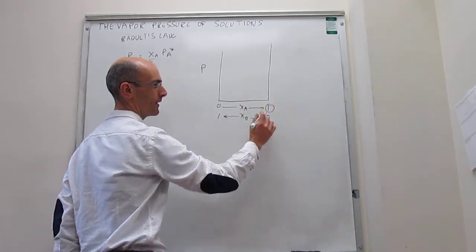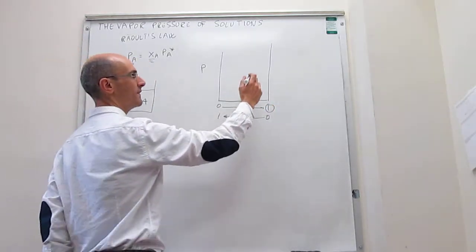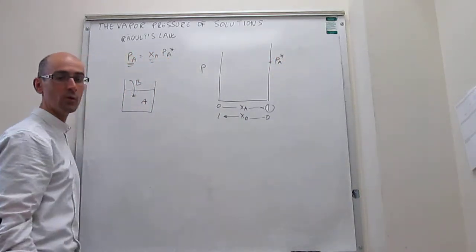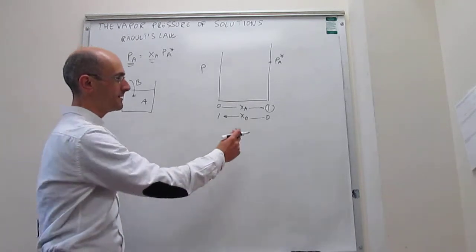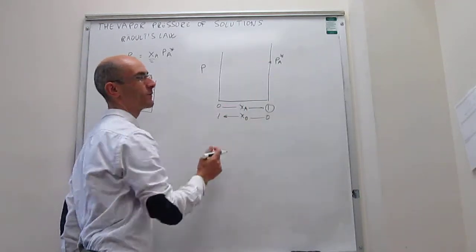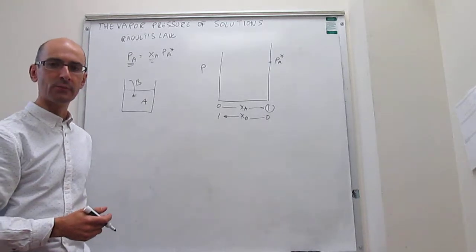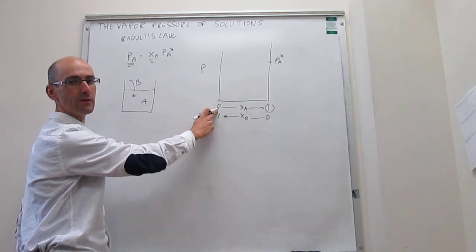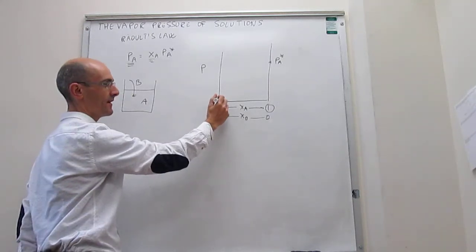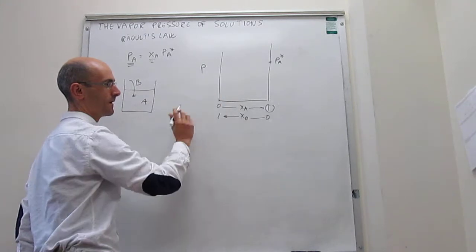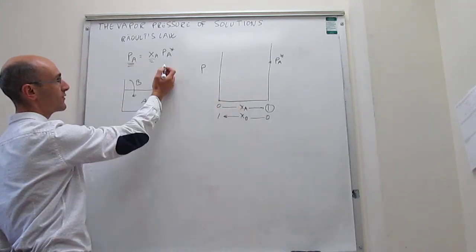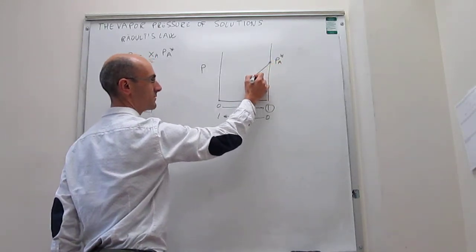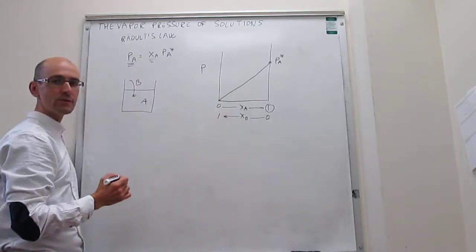If we have only A and there's no B present, then the vapor pressure is what we call the vapor pressure of A when pure. And if you don't have any A at all, then there can't be any vapor pressure of A — that vapor pressure of A should be zero. In the middle, there's a direct proportionality between the vapor pressure and the mole fraction, so this should be a straight line. And that is what we call Raoult's Law.